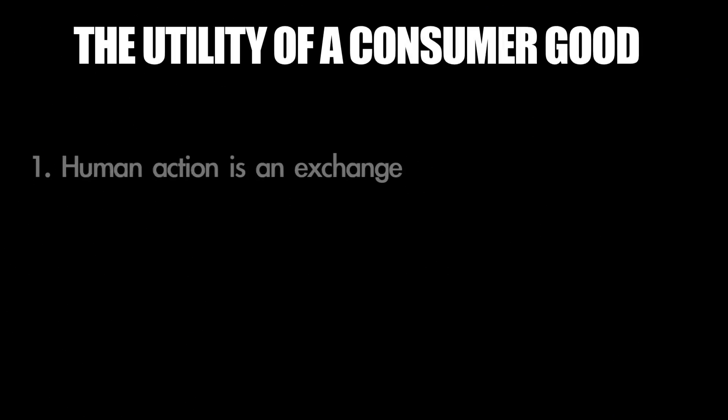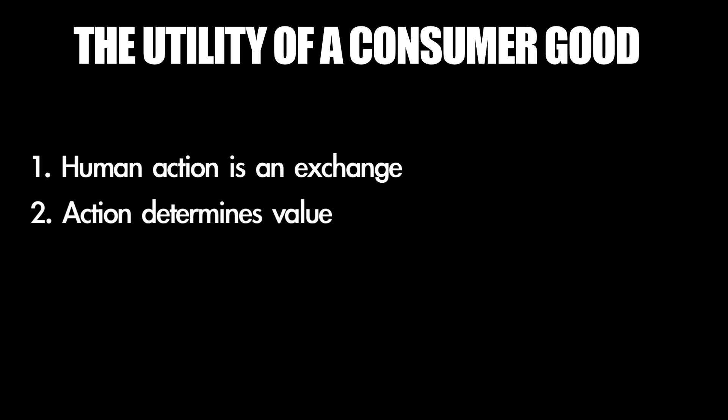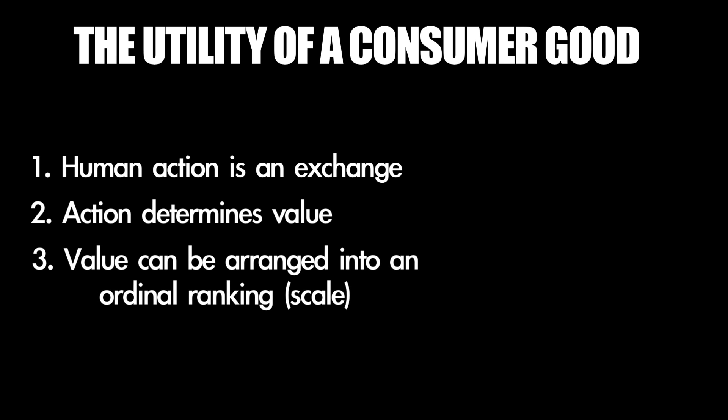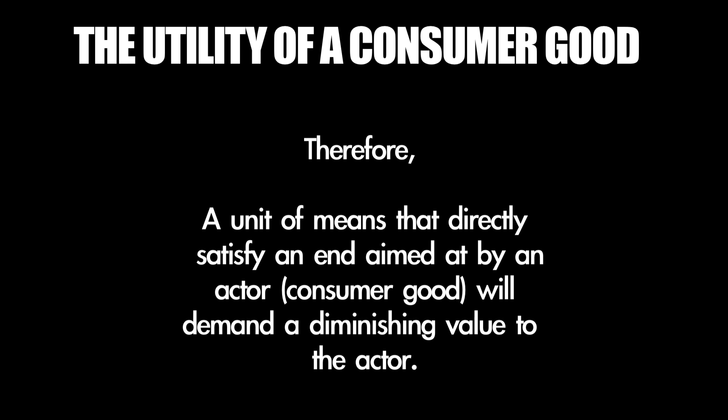If one wants to find the utility derived from any unit of a homogenous consumer good, all one needs to consider is: first, the fact that human action is an exchange — it means preferring one thing over the other, or in other words, the cost of choosing one end is determined by whatever other end you could have chosen. Second, that action determines what a man values most, because logically, what he did must be considered what he thought was most urgent. And lastly, that these preferences can be arranged into a scale. This scale shows us that because the more urgent want is satisfied first, each successive end must therefore be less important. Therefore, a unit of means that directly satisfy an end — a consumer good — will command a diminishing value to the actor.